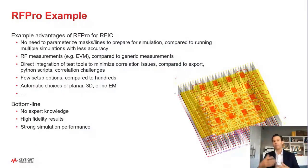I'll finish with an example, RFPro. Although the underlying simulation engines are the same between these various tools, there are differences that are optimized for each application. For example, with RFPro, there is no need to parameterize masks or lines to prepare for simulation. Also, RF measurements, like EVM, are built right into the tool. RF test software, which is the same as the software that might run on a Spectrum Analyzer, can be run directly from RFPro. This makes it easier to compare simulated results with measurements made in the lab. With a typical EM tool, you usually must choose hundreds of different setup options. With RFPro, it's just a few. The tool can automatically choose which parts of the circuit need 3D versus planar or no EM simulation. All of this means you can get very high-fidelity results in a short amount of time without needing to be an EM expert.